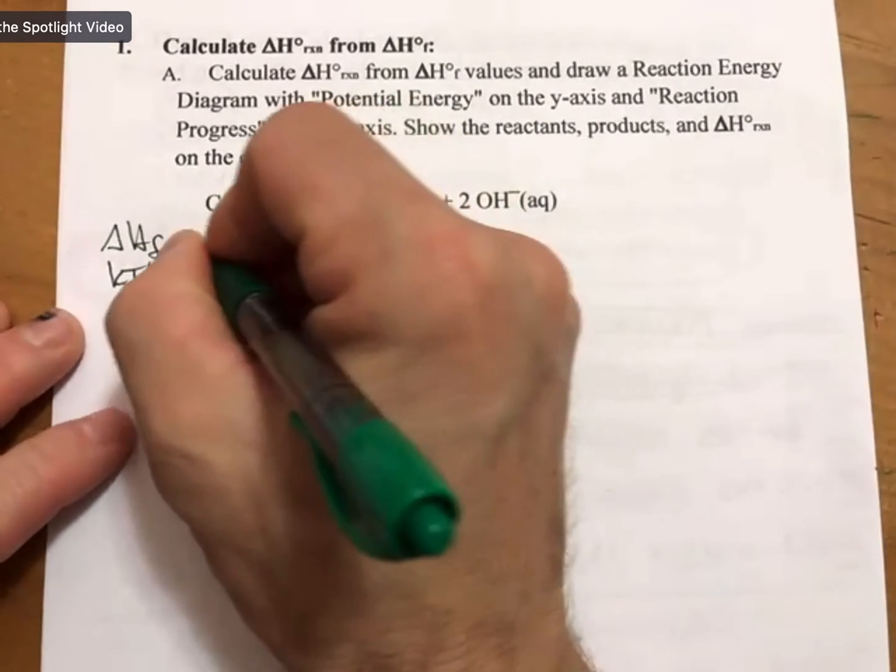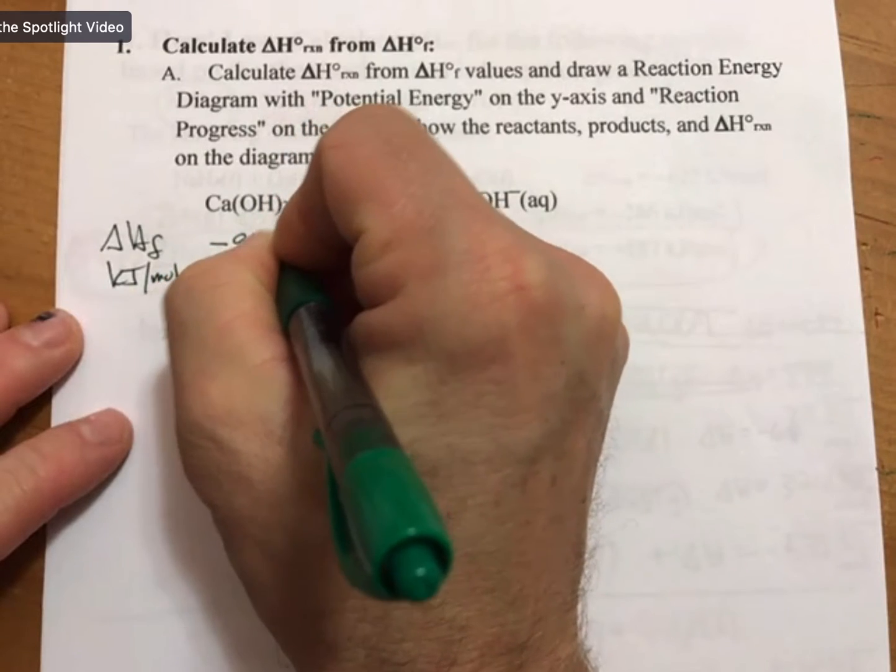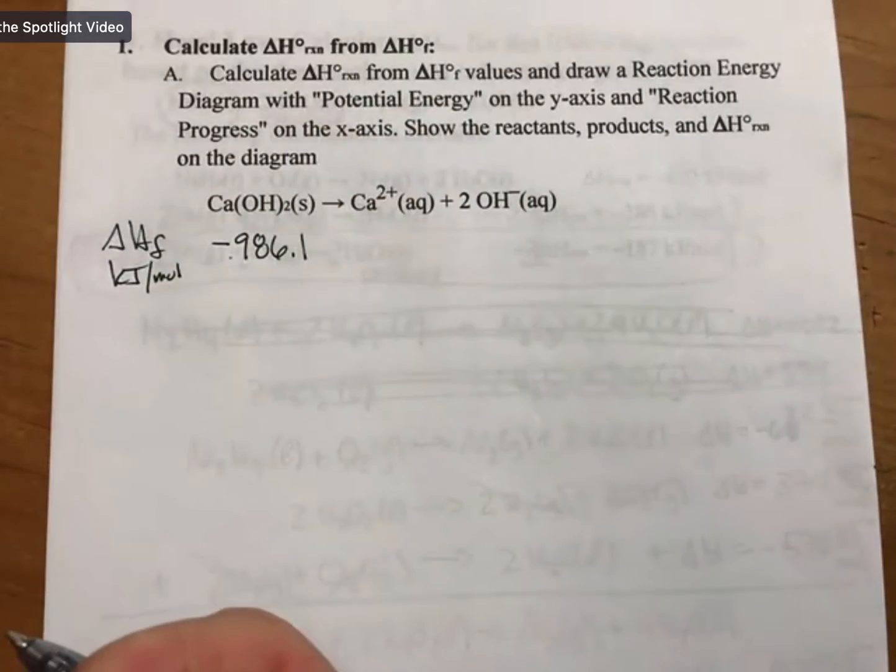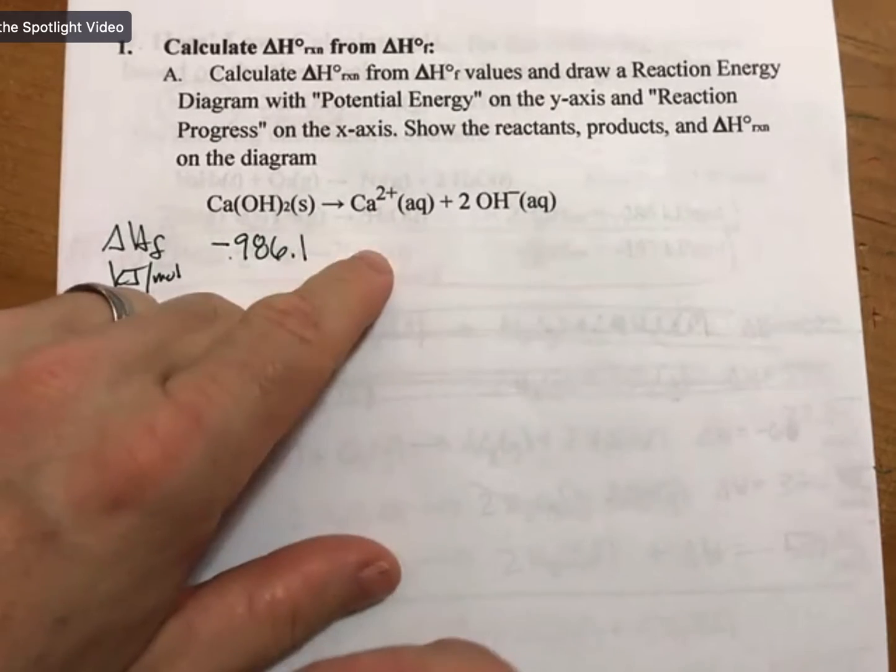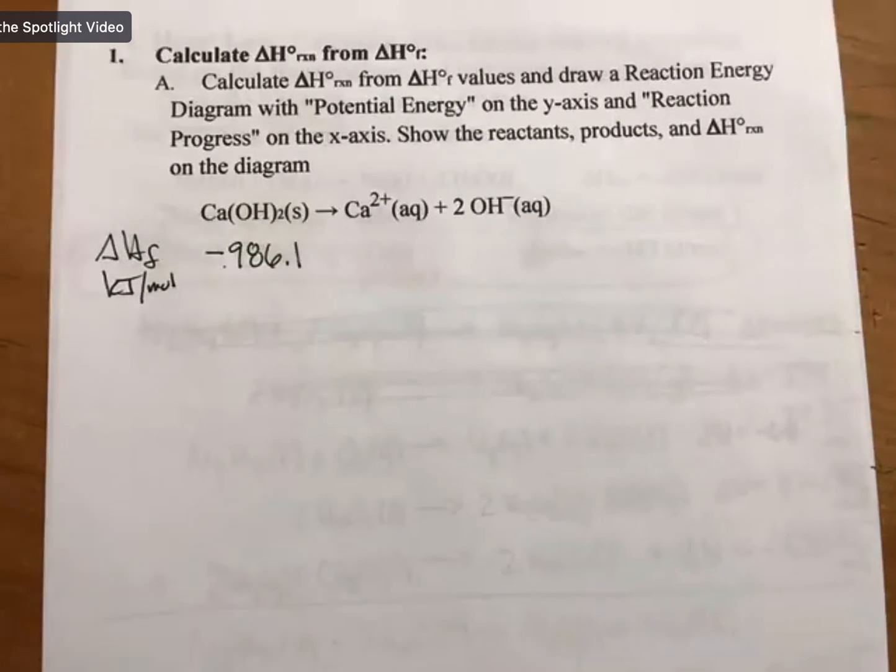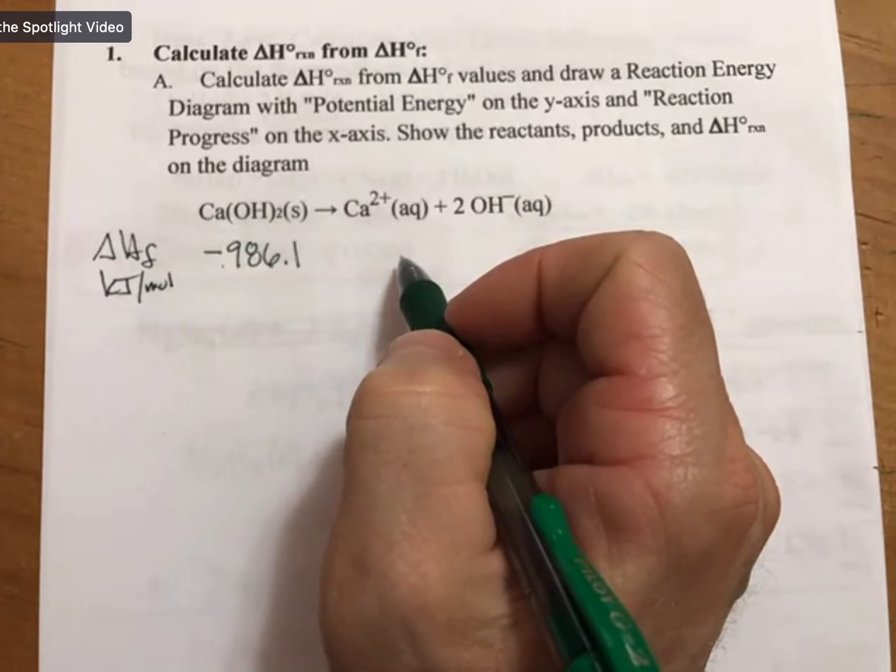It's listed as -986.1 for the solid. For calcium 2 plus aqueous—because the gas phase is also on there—it's -542.8.